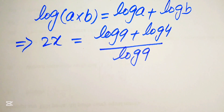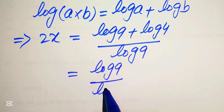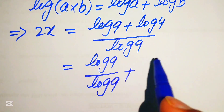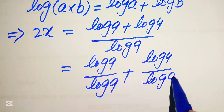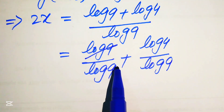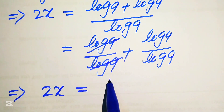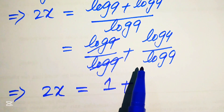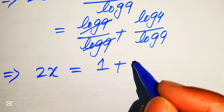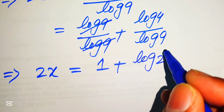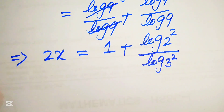In the next step we break this fraction. We write it as log of 9 divided by log of 9, plus log of 4 divided by log of 9. Here log of 9 is cancelled by log of 9, and we obtain 2x equals 1 plus log of 4 divided by log of 9. We rewrite 4 as log of 2 squared, divided by log of 3 squared.